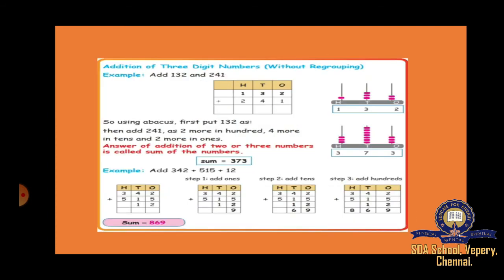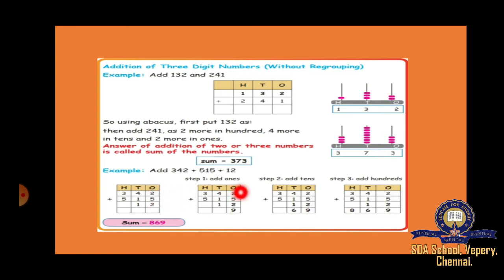Next, addition — addition without regrouping, meaning without carrying. For example, 342 plus 515 plus 12. Draw the box and write hundreds, tens, ones. Add the ones first: 5 plus 2 plus 2 equals 9. Then tens: 4 plus 1 plus 1 equals 6. Then hundreds: 3 plus 5 equals 8. The answer is 869.